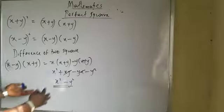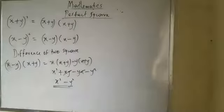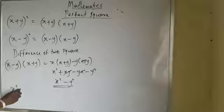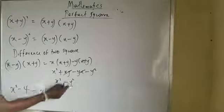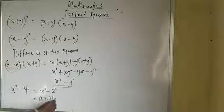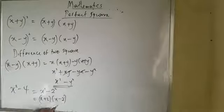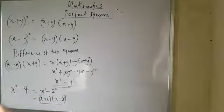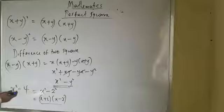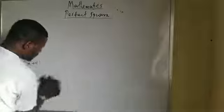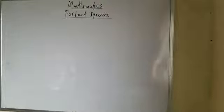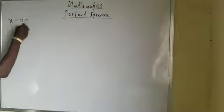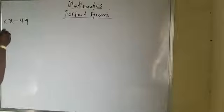So difference of two squares means x² − y² = (x − y)(x + y). For example, x² − 4 can be written as x² − 2², which factors as (x − 2)(x + 2). That is difference of two squares. To identify it: the sign connecting the two terms must be minus, and both terms must be expressible as perfect squares.